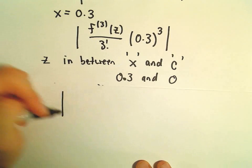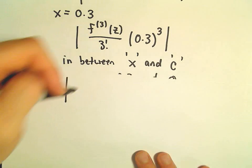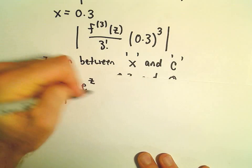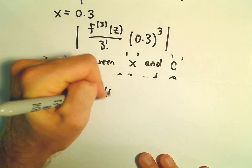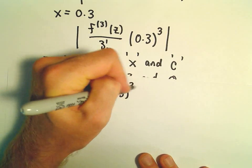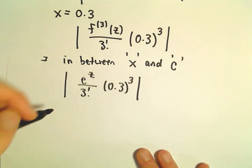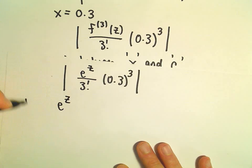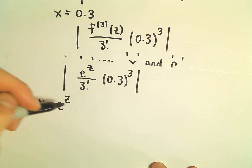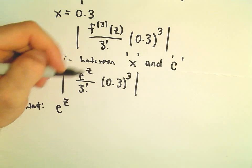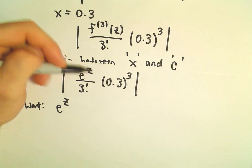Okay, so this is where we have to think just a little bit. So the third derivative is e to the z over 3 factorial. We have 0.3 cubed. We want to make e to the z to be as large as possible.